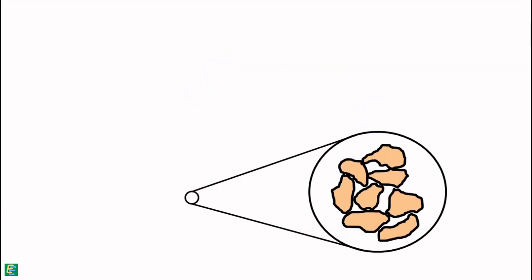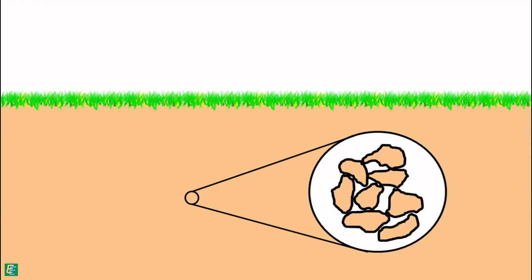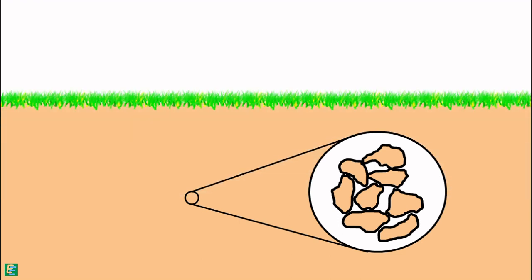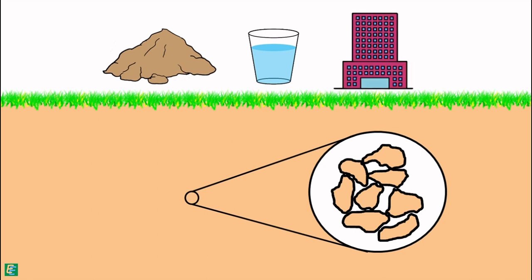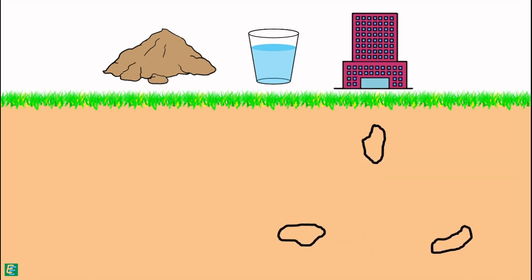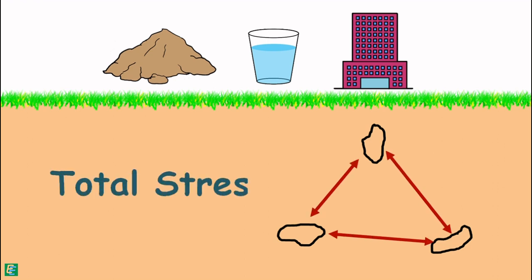These soil particles in a soil mass are burdened by the weight of everything above them, which includes the weight of all the soil particles above them, weight of water, and weight of any structure if present above. Because of that, these particles experience stress, which we call total stress.